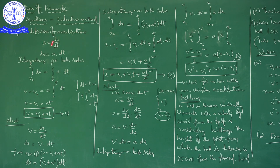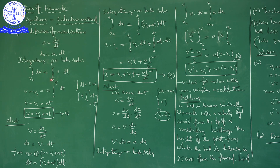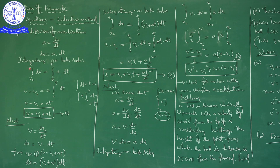We take dt to that side, then we can write dv is equal to a into dt. Now we are going to integrate on both sides within the limits: integration from v0 to v on the left side. v0 is the initial velocity and v is the final velocity. The time interval is 0 to t on the right side, a into dt. The limits are: when the time is 0, its velocity is v0 (initial velocity); when the time is t, its velocity is v.